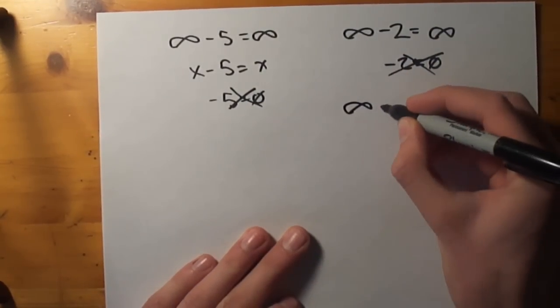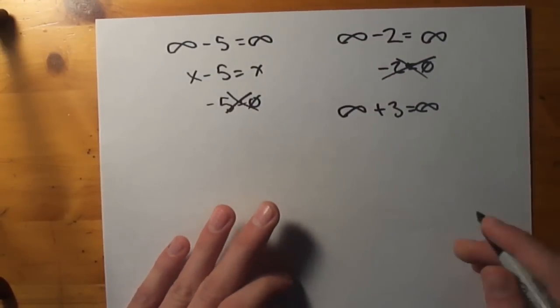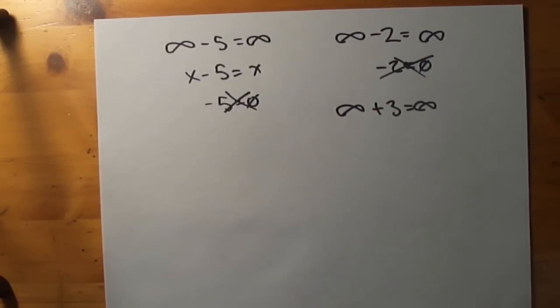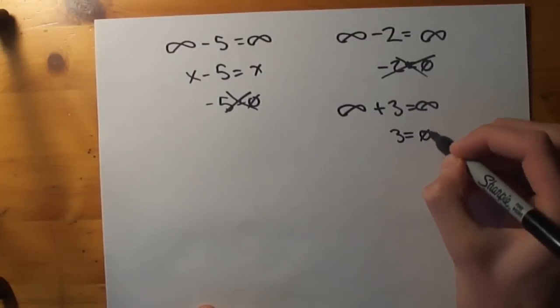And the same goes for addition. Infinity plus 3 is equal to infinity because it's 3 greater than infinity. But since infinity is forever, it's infinity. This still isn't possible because this would be 3 is equal to 0.